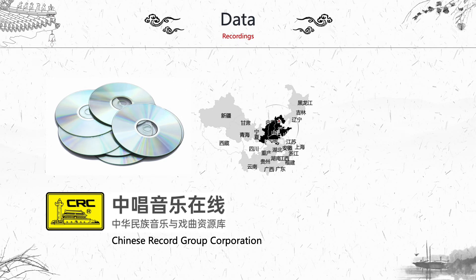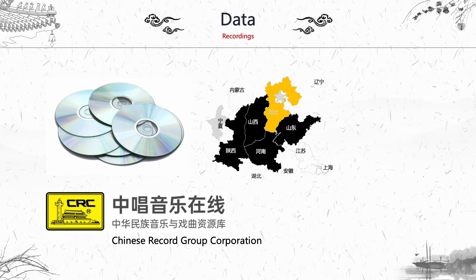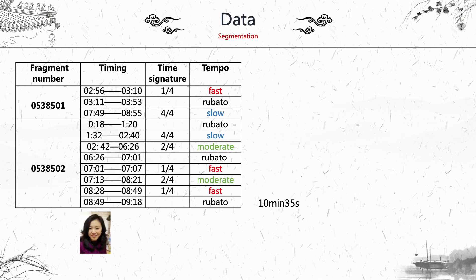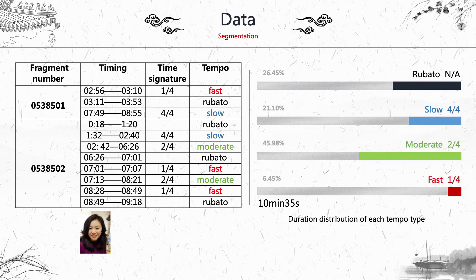We collected our recordings from the China Record Group Corporation, one of the biggest companies collecting Chinese folk music recordings. We got banzi recordings from the Middle East of China, and in this research we focus on the Hebei Province recordings. After getting the recordings, we performed tempo-based segmentation. In total there are 10 minutes and 35 seconds of recordings, yielding 11 segments. The moderate tempo type accounts for the most duration.